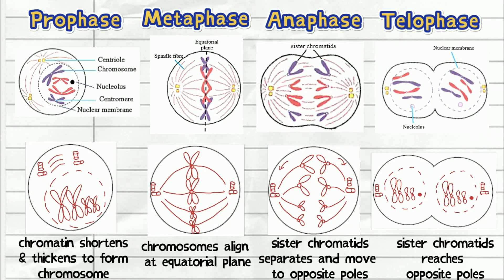In mitosis, the chromosome behavior is the most important thing you must know how to explain — from prophase all the way to telophase, the chromosomes act differently. Knowing how to explain the chromosomes and sister chromatids at each phase is actually key. Once you master that, you should be a pro at mitosis. If you still have any doubts or questions, you can DM me on Instagram or comment below. This is Damien Biology — I'll catch you guys in the next one. Bye-bye.